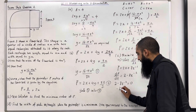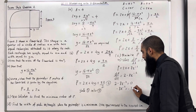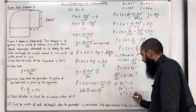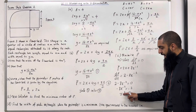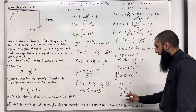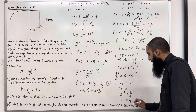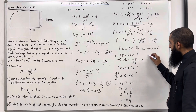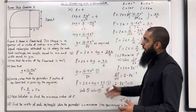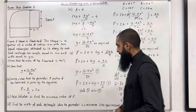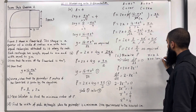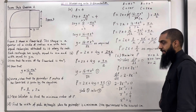So minus 8x to the power minus 2 equals minus 2, hence x to the power minus 2 equals a quarter. Removing the negative and reciprocating: x squared equals 4. So x equals plus or minus 2. But since x is a length, x is greater than 0, so we take x equals 2 as the solution.